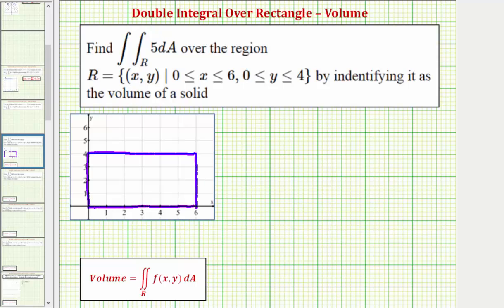Next notice how the integrand function f of x comma y is equal to the constant five, which means our function f of x comma y is going to be a plane that is parallel to the xy plane. Therefore we should be able to determine the volume of the solid using a geometric formula and not have to evaluate the double integral, though we will take a look at both methods.